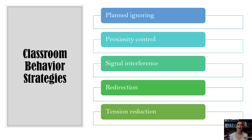Some general classroom behavior strategies you can use if you have a kid engaging in an undesirable behavior too often is that you can do some planned ignoring — you can simply just ignore the child's behavior. Now if you decide to do planned ignoring, it really only works on behaviors that are maintained by attention.